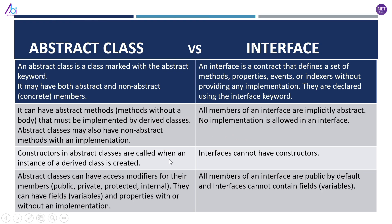Regarding constructors: in abstract classes, constructors are called when an instance of a derived class is created. Interfaces, however, cannot have any constructors. Abstract classes can also have access modifiers for their members — public, private, protected, internal — and they can have fields, variables, and properties with or without any implementation.